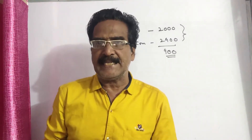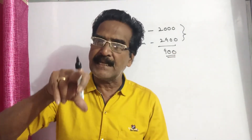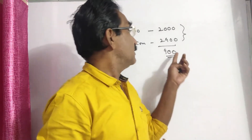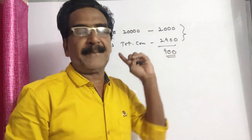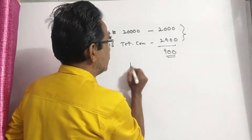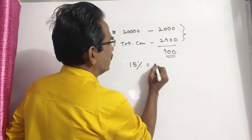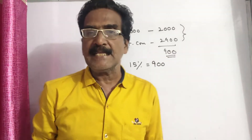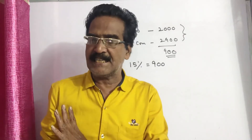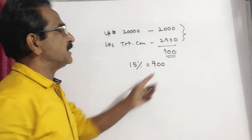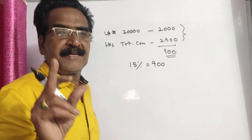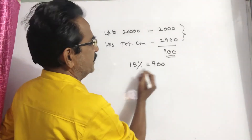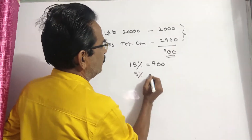What is the commission rate exceeding 20,000? Normal commission 10% plus additional commission 5% — so this 900 is equal to 15%. Because this 900 is 10% normal commission plus 5% additional commission. So 15% is equal to 900. We want only the additional commission 5%. 15% is equal to 900, then 5% is equal to 300.